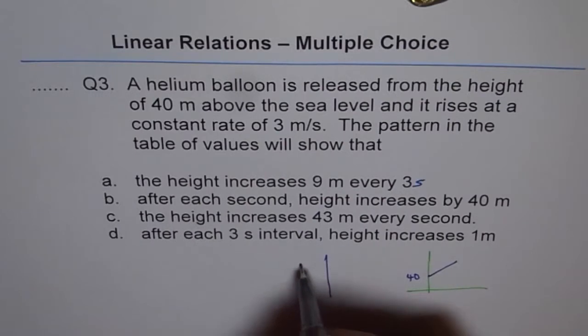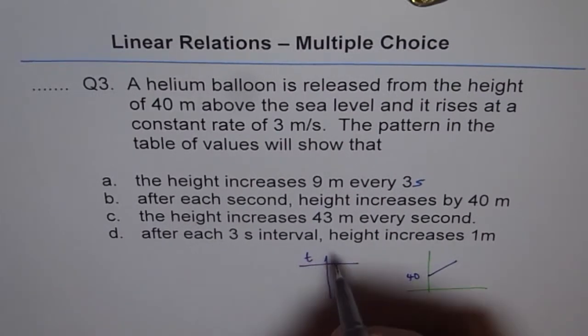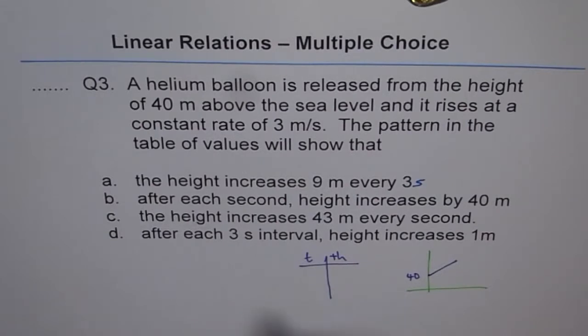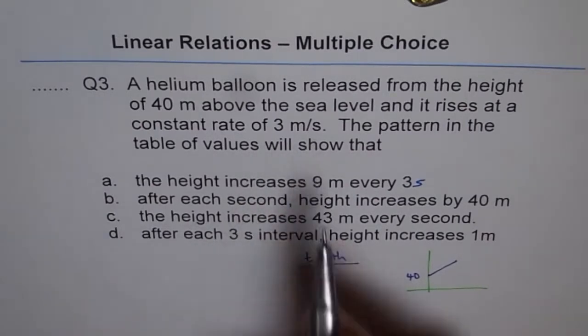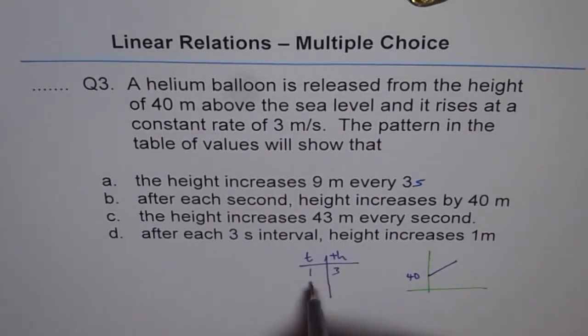And it rises at a constant rate of 3 meters per second. So that means if this is time and this is height, this is plus height, more, right? So 3 meters in 1 second. So 1 second, 3 meters; 2 seconds, it will be 3 more, 6; 3 seconds, 3 more, 9. Do you see that?